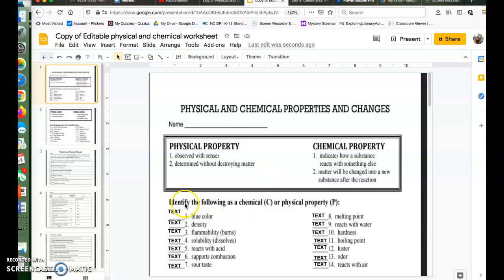For example, if I did this first one, blue color, we know because it's observed with the senses and it's determined without destroying the thing, that it is a physical property. So I would type a P right here. Density, again, it can be observed with the senses and it can be determined with that.